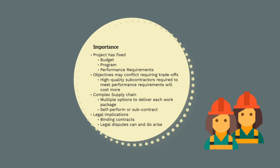Finally, procurement has significant legal implications. We are forming binding contracts with other companies, and legal disputes can and do arise. The way we allocate scope and risk, the contract particulars we choose, and even simple discussions and meetings during the procurement phase can all play into this. Procurement can have cascading impacts and we need to make sure we are setting the project up for success. Effectively, procurement is how we set up to deliver the project — we need to make sure we are choosing the right subcontractors and defining their scopes correctly to get the best possible project outcome.